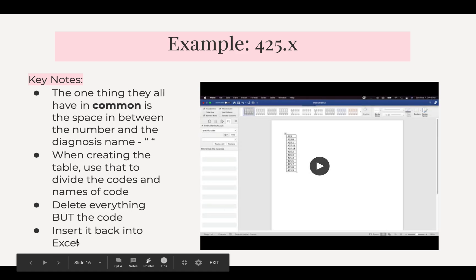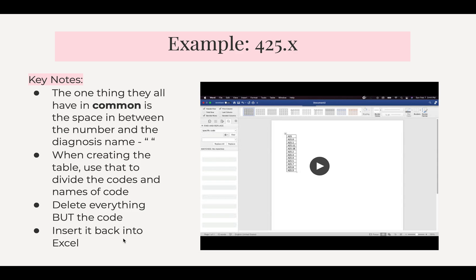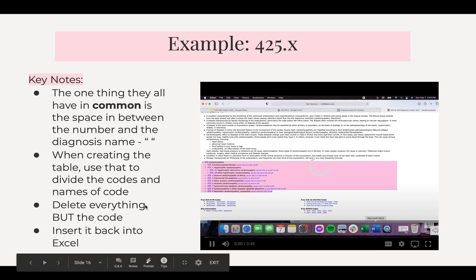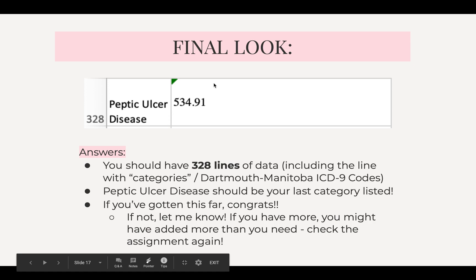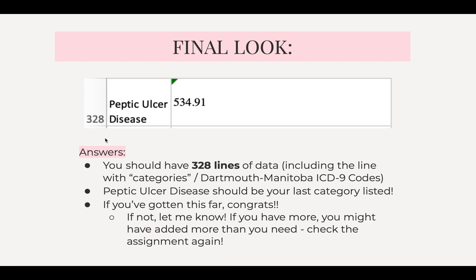Then insert it back into Excel — click Paste Special and then click Text. The final result should have 328 lines of data, including lines with the word category, Dartmouth, Manitoba, and ICD-9 codes. Peptic Ulcer Disease should be your last category listed, as it is the last one on slide nine. If you've reached this and have that number, congrats — you've done it. If not, let me know, I'm always available. If you have more, you might have added extra — check the assignment. Good luck.